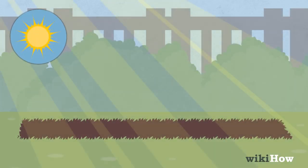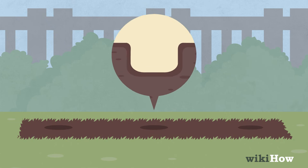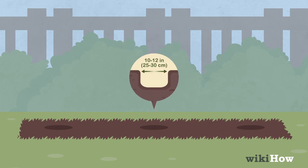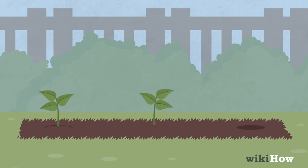Find a sunny spot with rich, well-drained soil to plant them outside. Dig holes that are about 6-8 inches, 15-20 centimeters deep, and 10-12 inches, 25-30 centimeters across, and place the pepper plants in them. Then fill the holes loosely with soil.